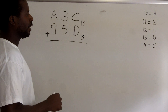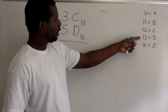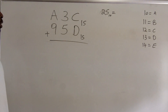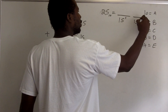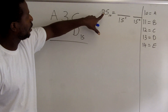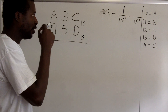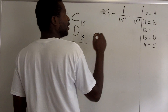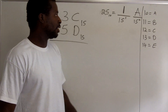So I'm adding C plus D. C is 12 and D is 13, so adding C plus D is adding 12 plus 13, giving 25 base 10, which I now need to convert to a base 15 number. There's a 15 to the first place and a ones place. How many groups of 15 are there in 25? There is one group of 15, and what's left over is 10.